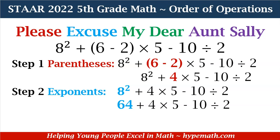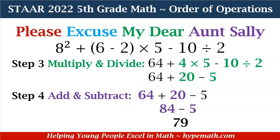Now our expression is 64 plus 4 times 5 minus 10 divided by 2. Then we handle multiplication and division from left to right. We start with 4 times 5, which is 20, then 10 divided by 2, which is 5. So now our expression is 64 plus 20 minus 5.